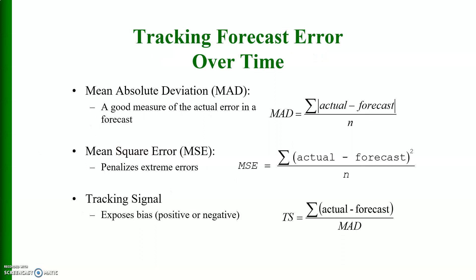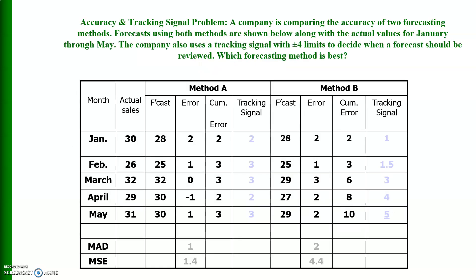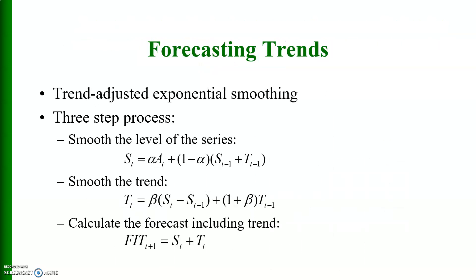These are tracking forecast error over time: mean absolute deviation, mean square error, and tracking signal. These are some other methods.